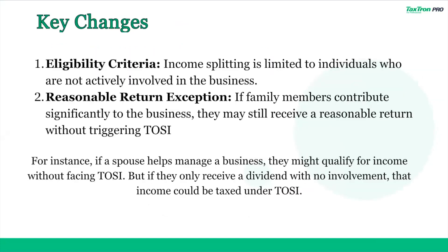Some key changes: introduced in 2018, the TOSI rules brought significant changes to how income splitting is taxed. Eligibility criteria: income splitting is limited to individuals who are not actively involved in the business. Reasonable return exception: if family members contribute significantly to the business, they may still receive a reasonable return without triggering TOSI. For instance, if a spouse helps manage a business, they might qualify for income without facing TOSI, but if they only receive a dividend with no involvement, that income could be taxed under TOSI.